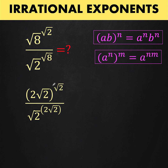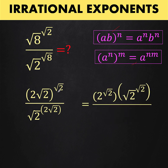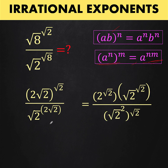Now we apply the laws of exponents — specifically the power of a product and power of a power rules. The numerator has the form (a times b) raised to n. Here, a is 2, b is the square root of 2, and the exponent n is the square root of 2. Applying the power of a product rule, we write each factor raised to the common exponent: 2 raised to square root of 2, times square root of 2 raised to square root of 2. For the denominator, we have the form n times m — that is 2 times square root of 2.